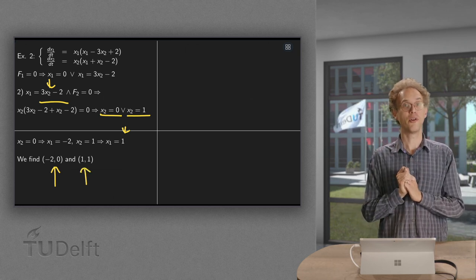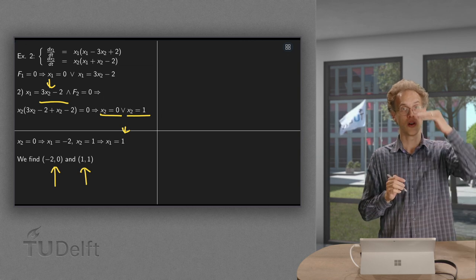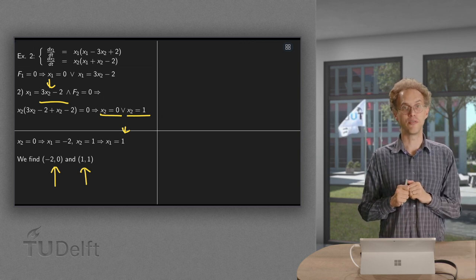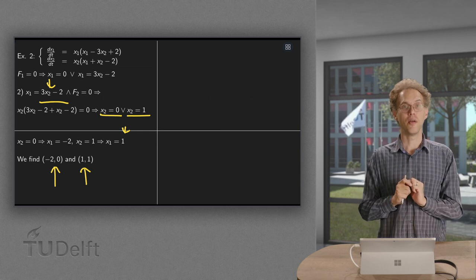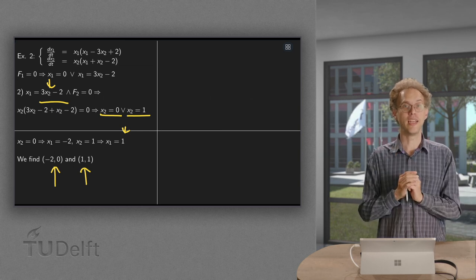So this is how you find your equilibrium points. All the right-hand sides have to be equal to zero. And be careful because you can end up with many, many cases. So be careful that you treat all cases one by one.